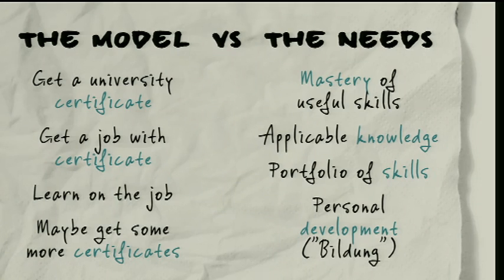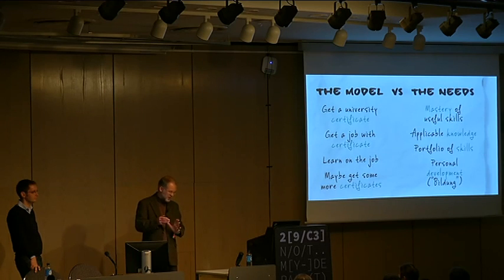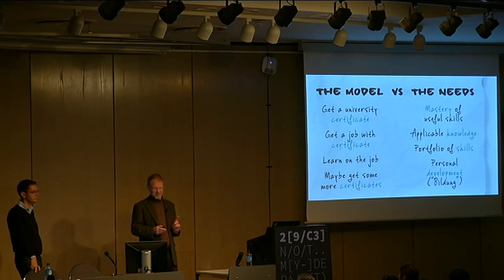Does that still fit the needs of today's society? What has survived is the model: you get a university certificate, use it to get a job, get trained on the job, and maybe go back for a master's degree. But does that really work? What society needs is students who are able to do something — mastery of useful skills, able to apply their knowledge, not just possess it.